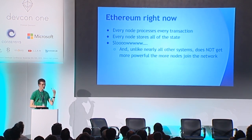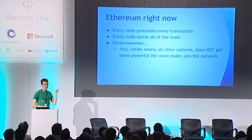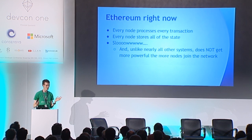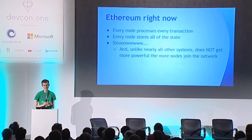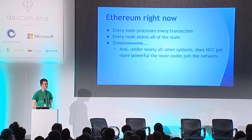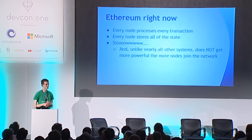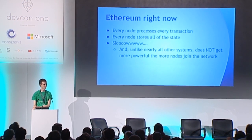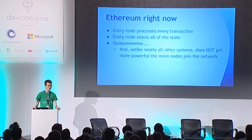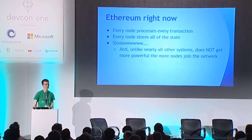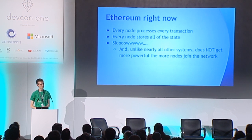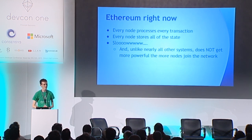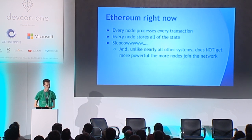Ethereum right now: every single computer in the Ethereum network processes every transaction, every single computer in the Ethereum network maintains the entire state, and that is very slow. On the Olympic test net, we achieved an impressive 20 transactions per second, which I believe is roughly what normal computers were able to do at some point in the 1980s.